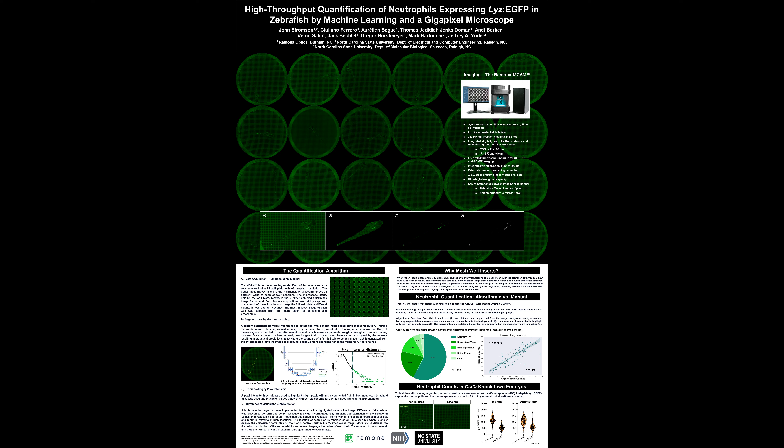An R-squared value of 0.7573 was obtained for this comparison, showing a fairly good fit between the manual and algorithmic counts. To test the cell counting algorithm, zebrafish embryos were injected with CSF-3R morpholino to deplete Lise-EGFP expressing neutrophils, and the phenotype was evaluated at 72 hours post-fertilization by manual and algorithmic counting. Very consistent results were found between the two methods, giving us high confidence in our algorithmic counting.